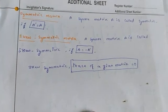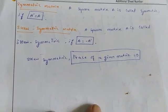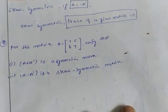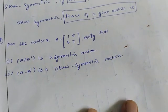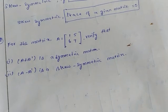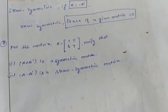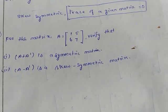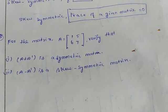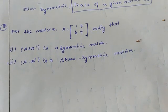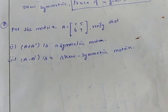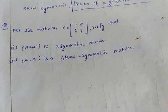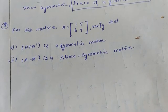It is a shortcut. Next sum: for the matrix A equal to [1, 5; 6, 7], verify that A plus A dash is a symmetric matrix, and the second subdivision: A minus A dash is a skew symmetric matrix.